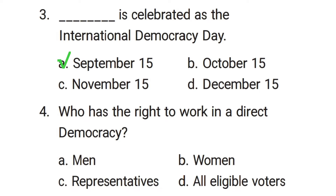The fourth question is: who has the right to work in a direct democracy? Options: men, women, representatives, all eligible voters. The correct answer is option D, all eligible voters.